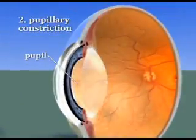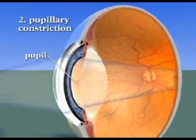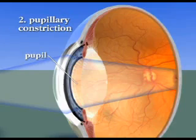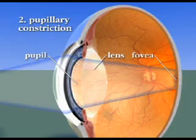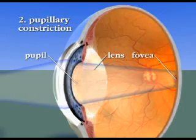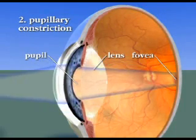Second, the pupil must constrict to restrict the entry of light rays diverging from a near object, since diverging rays cannot be bent enough by the periphery of the lens to make them fall on the fovea. If the pupil were to remain dilated, the image would be blurred.